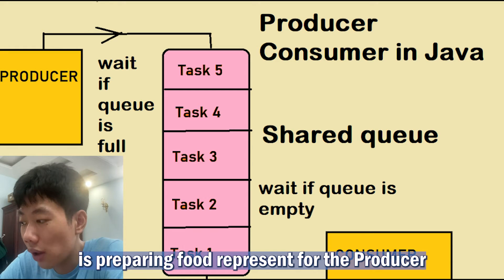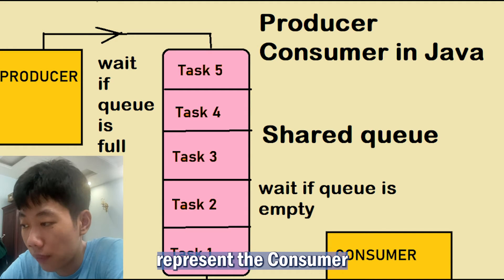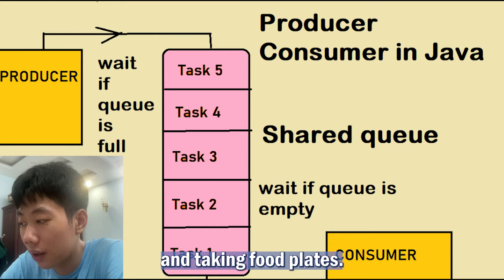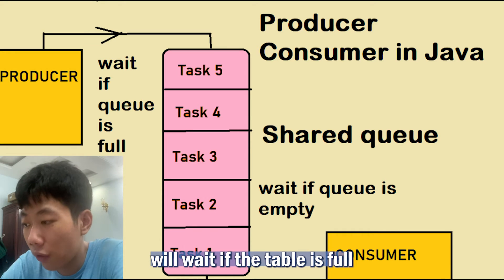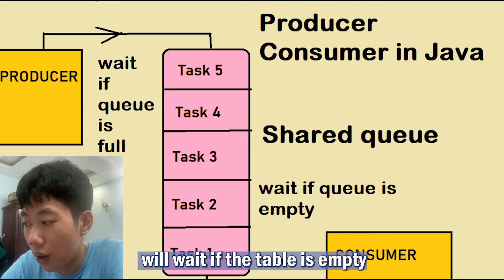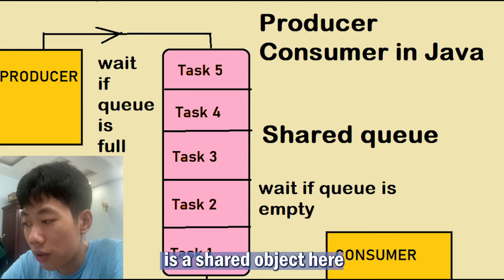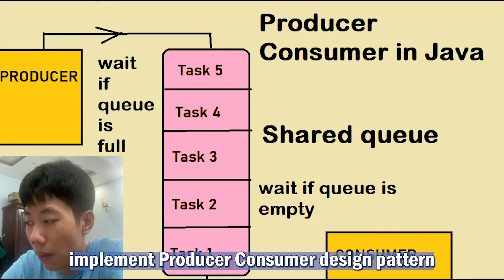The producer-consumer pattern is everywhere in real life and depicts coordination and collaboration. For example, one person preparing food represents the producer, while the other one serving food represents the consumer. Both will use a shared table for putting and taking food. The producer — the person preparing food — will wait if the table is full, and the consumer — the person serving food — will wait if the table is empty. The table is the shared object here.